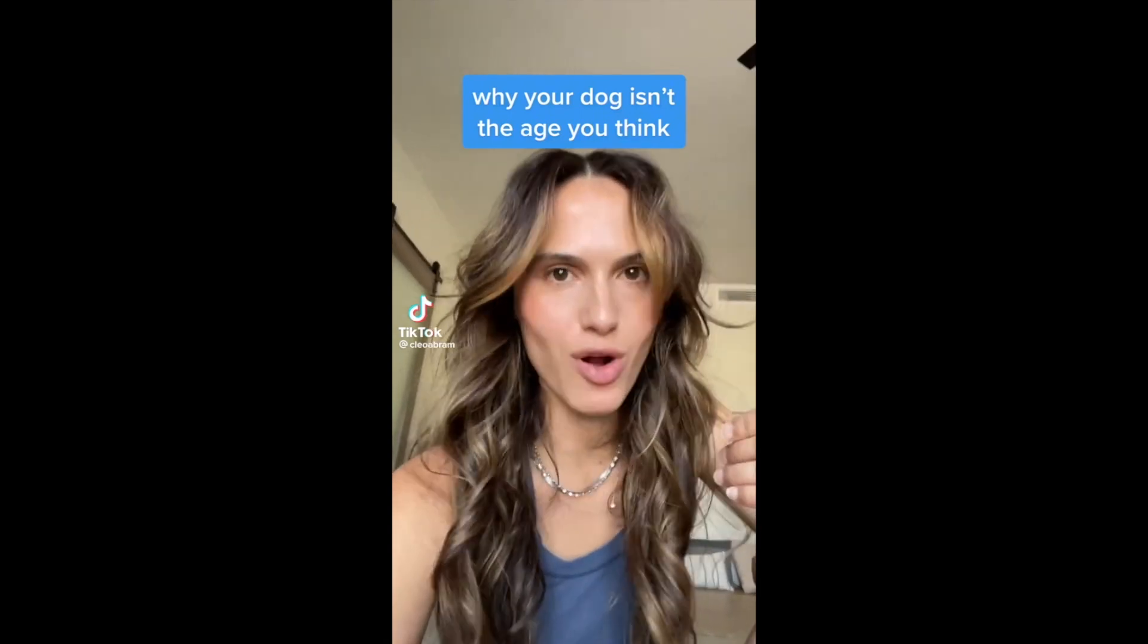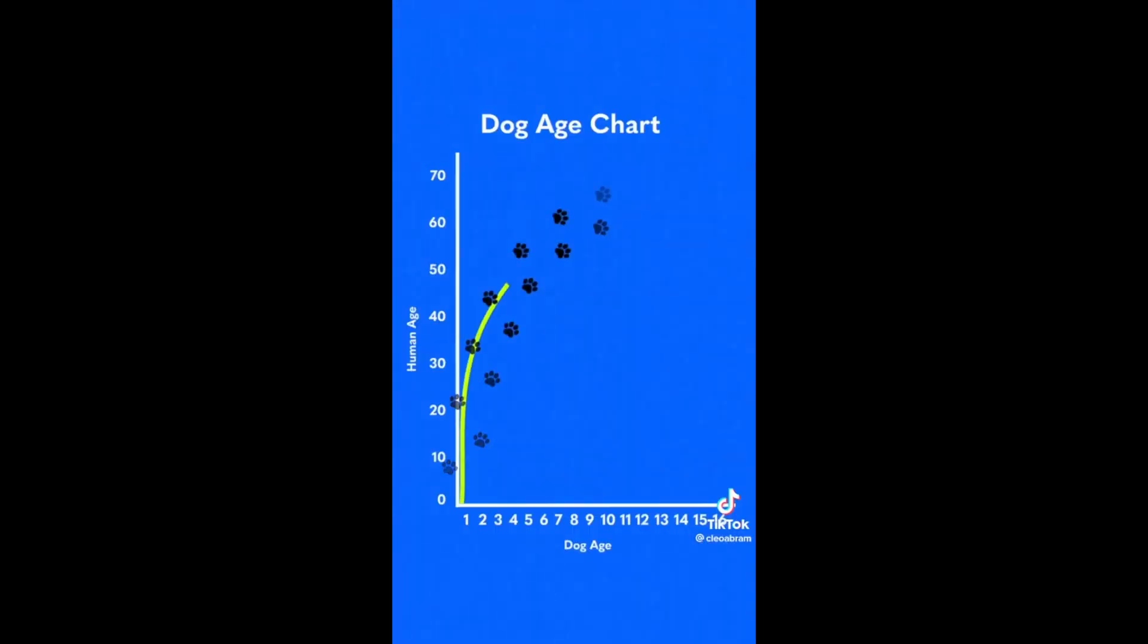Turns out that I've been estimating my dog's age wrong, because multiply by seven is not a real thing. Instead, geneticists at UC San Diego created this chart, and it's curved, which blows my mind.